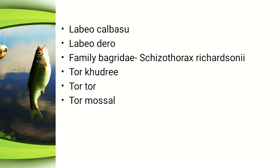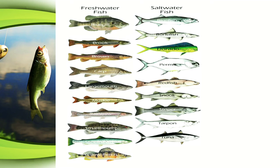Further game fish species include Labeo calbasu, Labeo dero, and from family Bagridae: Cossypha richardsonii, Tor khudree, Tor tor, and Tor mosal. These are the fishes that come under sport fishes, representing both freshwater and saltwater examples.